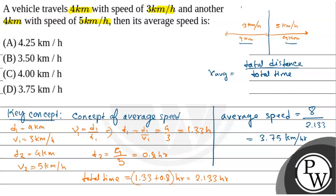Okay. So our average speed is 3.75 km per hour. That means option D is correct. Hope you understand it. Thank you.